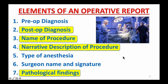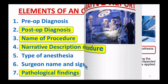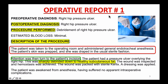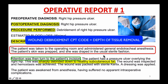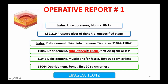For each and every operative report I go over, there are key takeaways that you should note and learn. The key takeaway from operative report number one is CPT coding for wound debridement based on the depth of tissue removal — either subcutaneous tissue, muscle, fascia, or bone — and also the size of the wound, starting from the first 20 square centimeters or less. You should highlight these codes in your CPT book and take note of the differences.